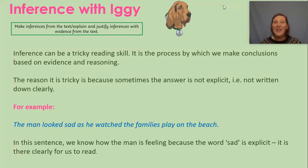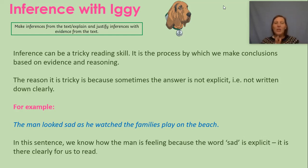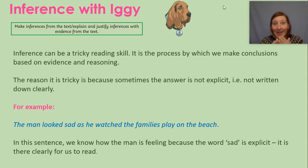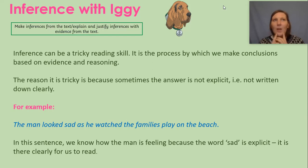Do you remember this dog yesterday — inference with Iggy? Inference can be a really tricky skill. It's the process where we make conclusions based on evidence and reasoning — where we think, hmm, I think this is what's happening. Sometimes this can be a little bit tricky because it's not explicit, meaning it's not written down clearly in the text. You can't simply retrieve that information; you need to think about whether it's this or that. It's your opinion of what the writer is trying to tell you.